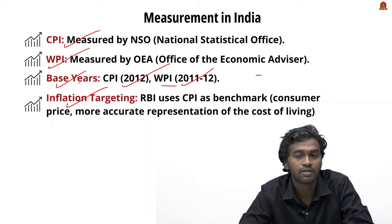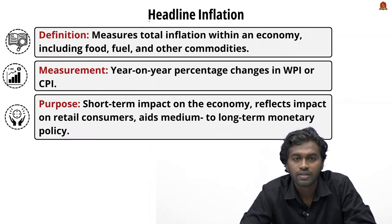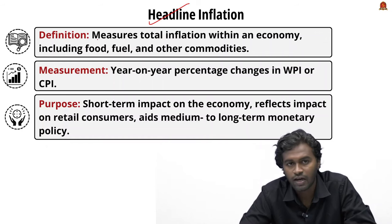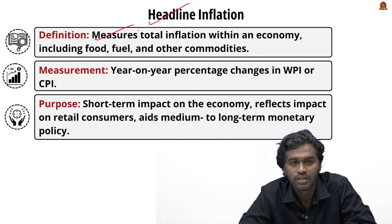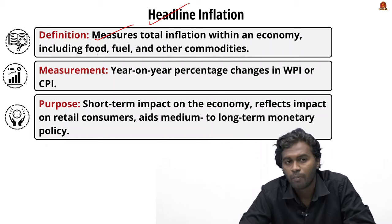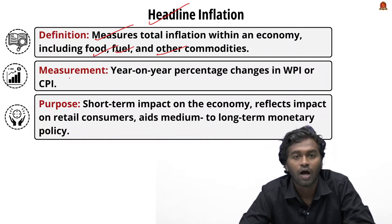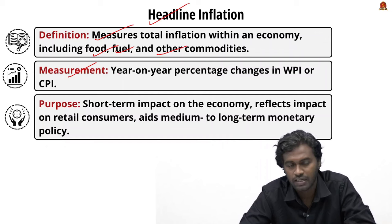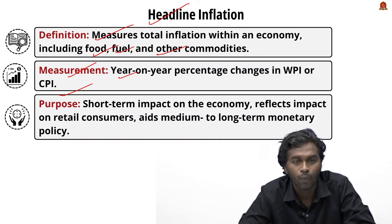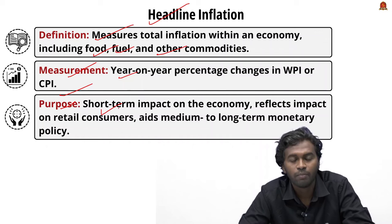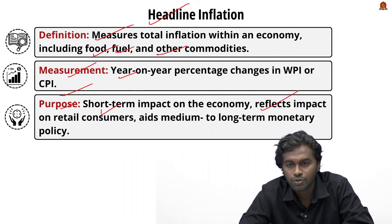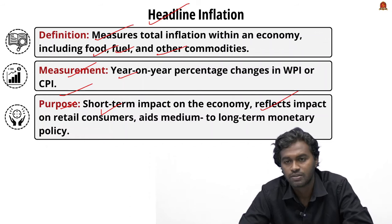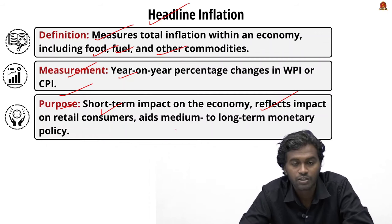We mentioned the term 'headline inflation' — what is it? Headline inflation measures the total inflation within an economy, including volatile commodities such as food and fuel, as well as other essential commodities. It is measured based on year-on-year percentage changes in WPI or CPI. Its purpose is to understand the short-term impact of inflation on the economy, how it affects retail consumers, and to frame medium to long-term monetary policy.